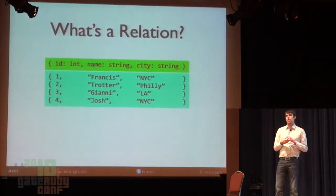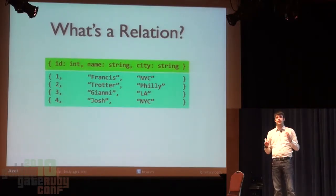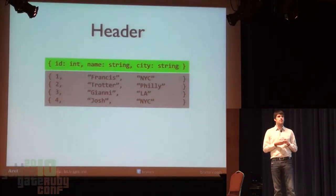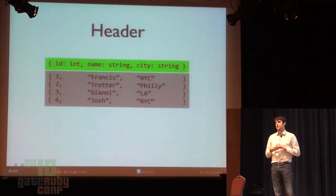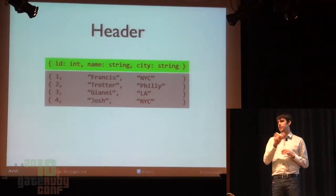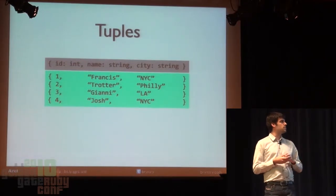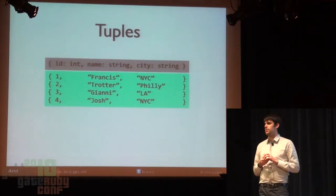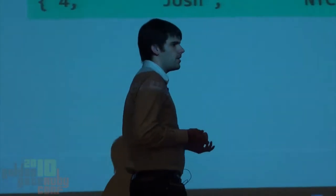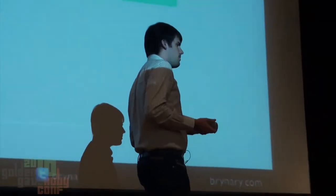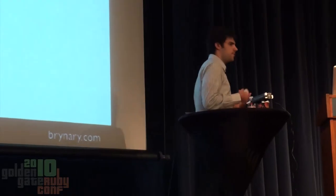Relational algebra 101 — let's cover what is a relation. A relation is composed of two components: a header, which is basically a list of columns, and tuples. Each column has a name and a type. You can see that this relation has four tuples associated with it, and you can start to see how this maps to SQL concepts. You could represent a relation with an array of arrays in Ruby. It maps to things like a table, a view, or even a query result set that you run on an ad hoc basis and then throw away.